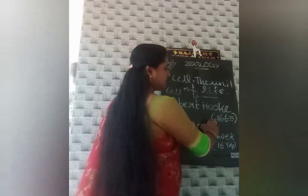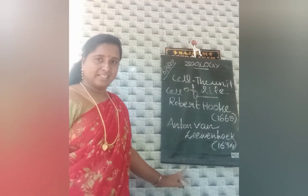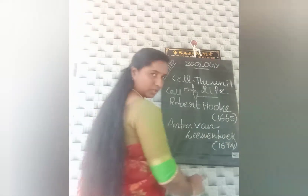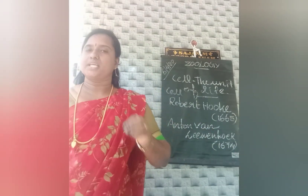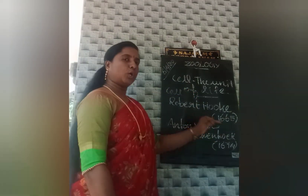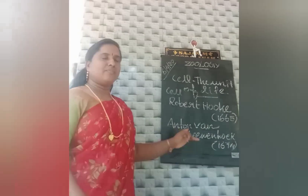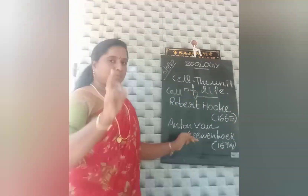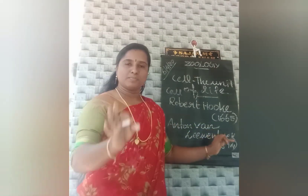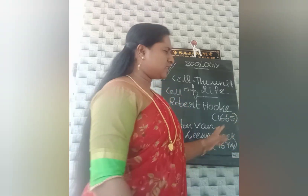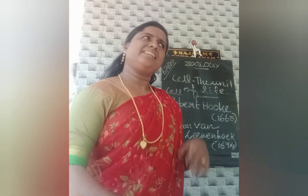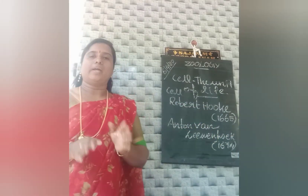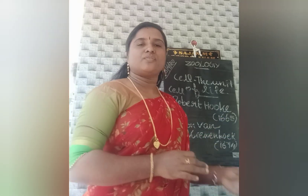Robert Hooke coined the term cell in 1665. Anton van Leeuwenhoek, in 1674, first observed the living cell — that was Spirogyra, which is an alga. He also observed bacteria, and he is known as a microbiologist. So Robert Hooke coined the term cell, and Anton van Leeuwenhoek first observed the living cell.